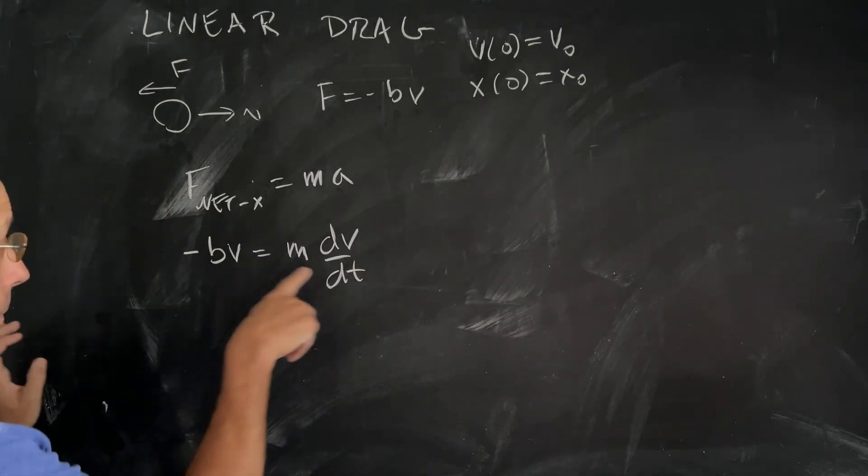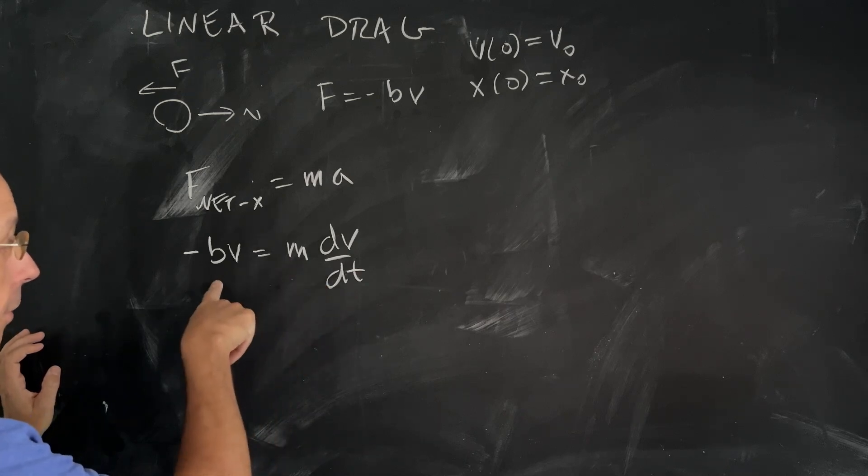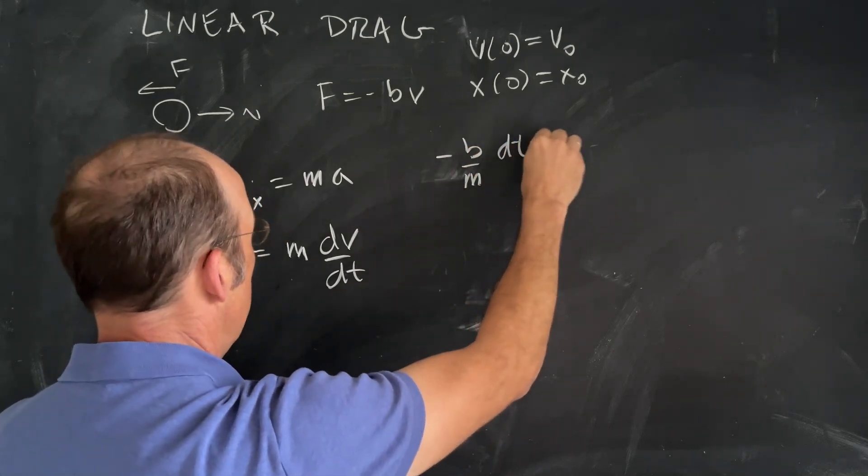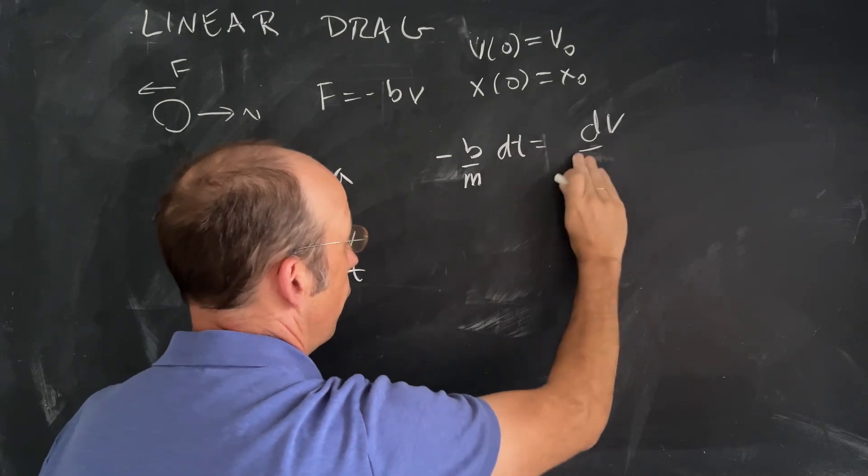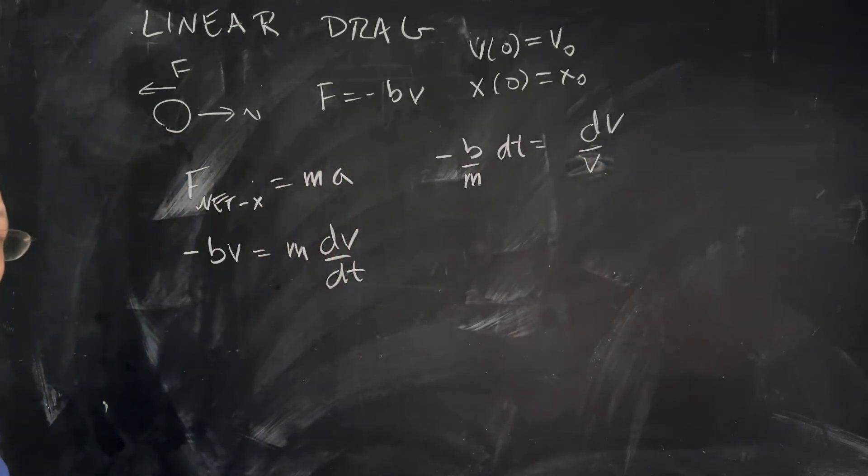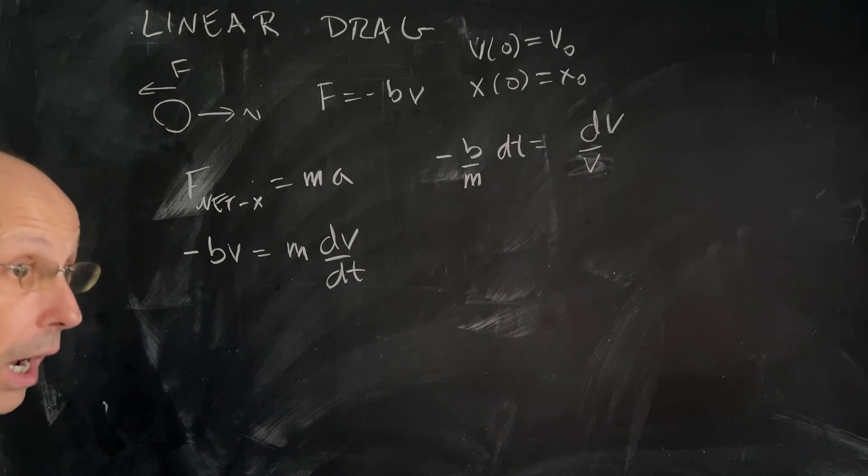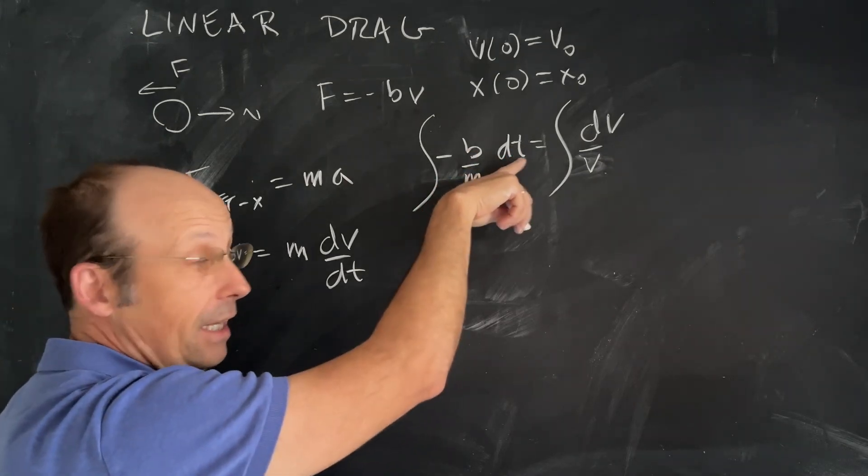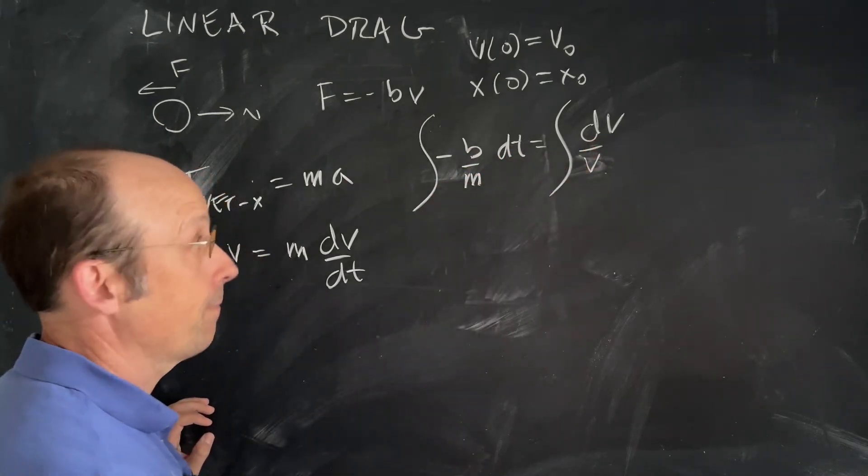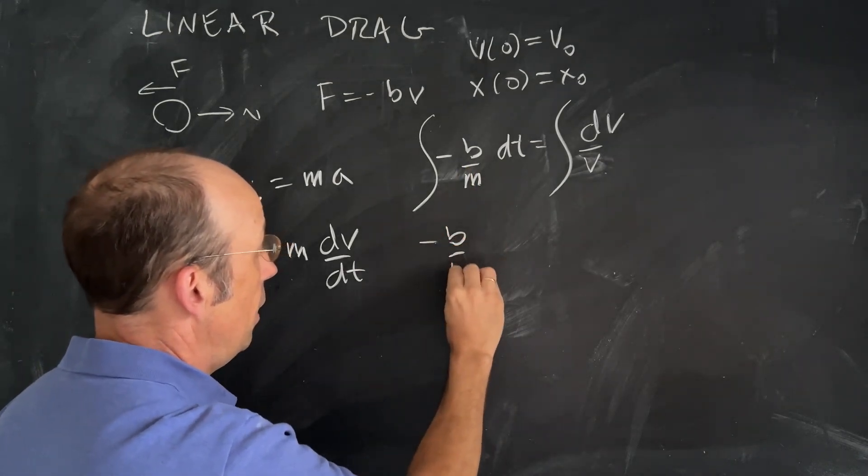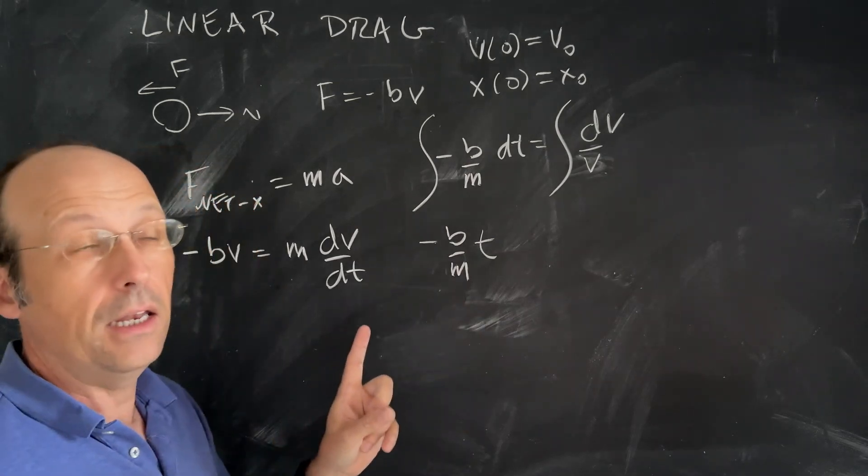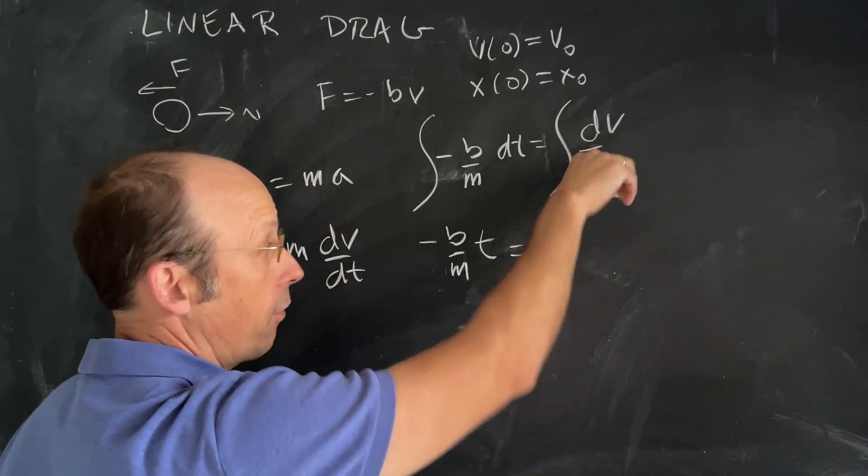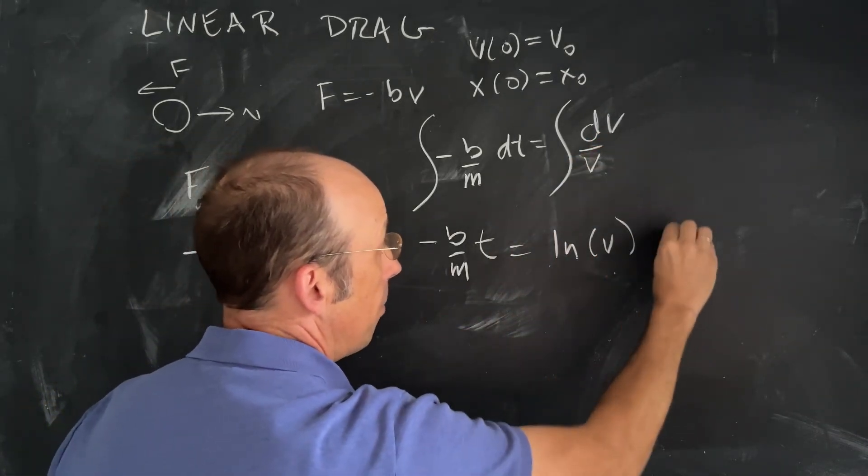If I multiply both sides by dt, divide both sides by V, I get negative b over m dt equals dv over v. Now I can integrate both sides of the equation because this side only depends on constants and t, and this side only depends on v. If I integrate this side I get negative b over m times t. I have a constant because I did an indefinite integral, but both sides have a constant. Over here, the integral of dv over v is the natural log of v plus a constant.